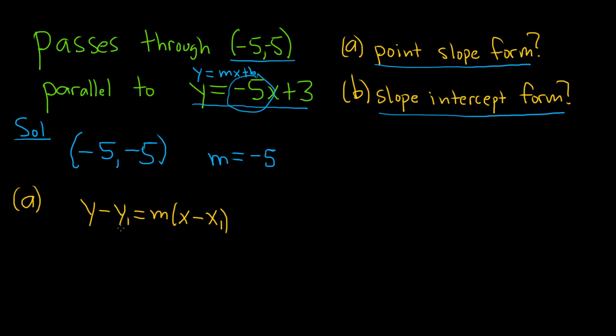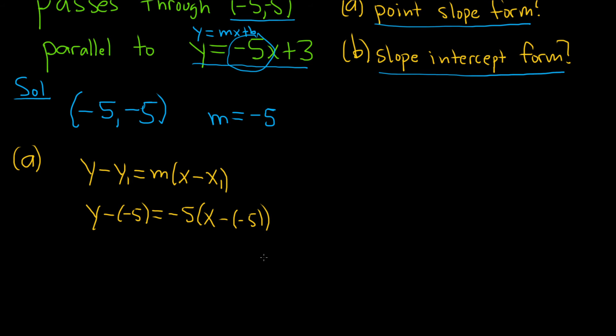Now we just plug in the numbers. So it would be y minus negative 5, or just y plus 5, and then negative 5. So many negatives. Everything is a negative 5. So on the left here it will become y plus 5. And then here it's negative 5, and this will be x plus 5. Good stuff.